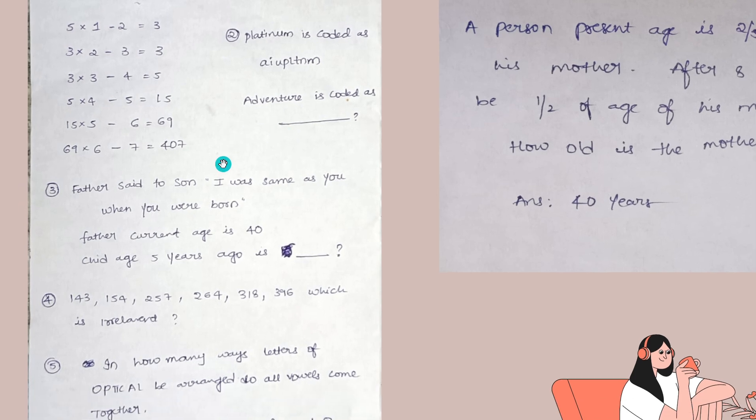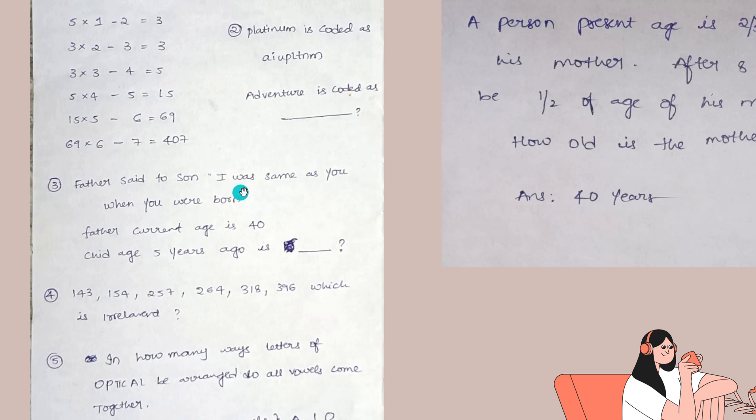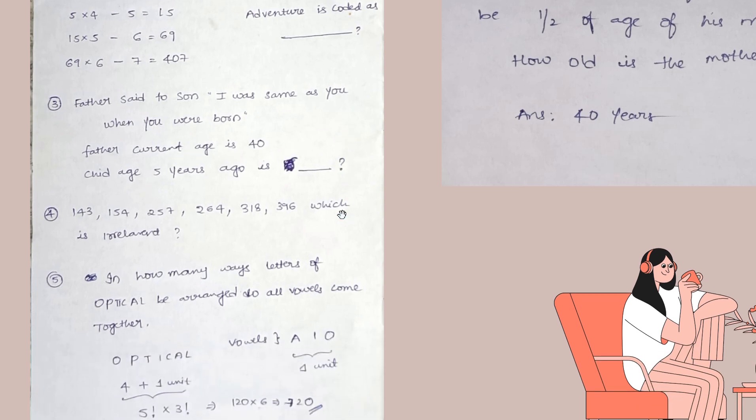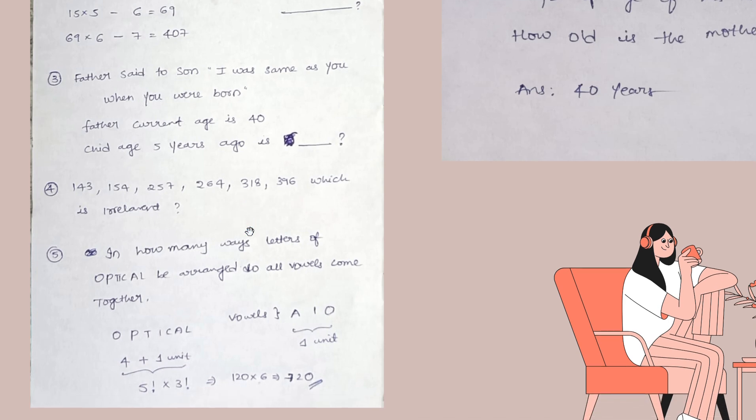Father said to son, 'I was the same age as you when you were born.' Father's current age is 40 and the child... We have not memorized this question correctly, but give it to ChatGPT and it can frame it for you. This is the number series for this problem - a few of my friends got it and I faced this problem too.